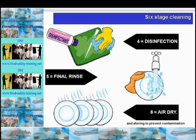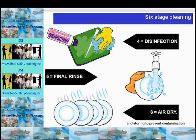The fourth stage is disinfection — the destruction of residual microorganisms if required. The fifth stage is the final rinse — removal of disinfectant residues, which may not always be required. The sixth and last stage is drying — removal of the final rinse water. Air drying is preferred and items should then be stored to prevent contamination, as using paper towels or tea towels to dry could reintroduce contamination.